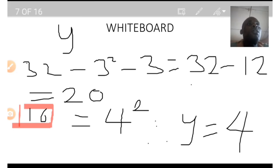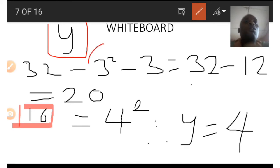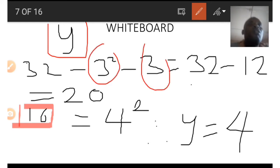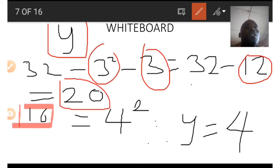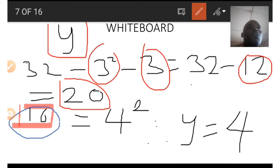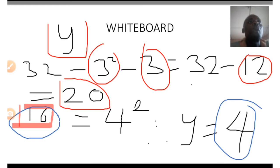Now we are given 32 and 3, and we need to find 4. Let y represent the unknown number. We square 3 and subtract both 3 and 3 squared from 32: that is 32 minus 12, which equals 20. The closest perfect square to 20 is 16, and the square root of 16 is 4, so the number is 4.